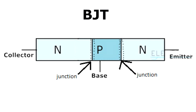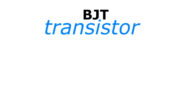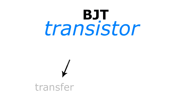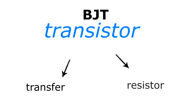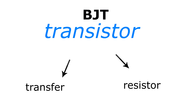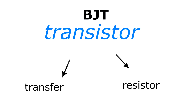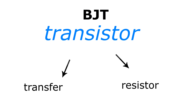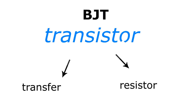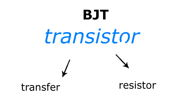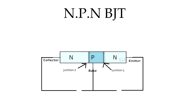And 'junction' because we have two junctions between the N and P-type and P and N-type materials. The word 'transistor' contains two words: 'transfer' and 'resistor' — 'transfer' because electrons transfer from one region to another, and 'resistor' because of the difference in resistance between each region.